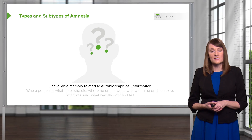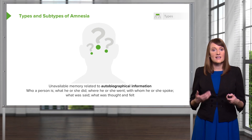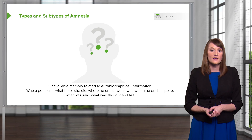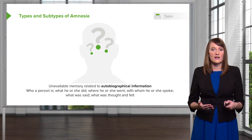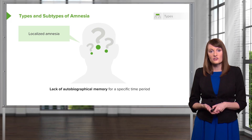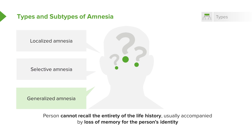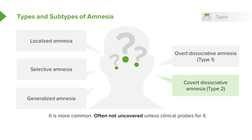When assessing someone, you want to know what memory is available to them. If they aren't recalling autobiographical memory, you want to explore what they can recall — what was happening before an isolated event, how they were thinking, and what they were feeling. You're looking for different subtypes of amnesia: localized amnesia, selective amnesia, generalized amnesia, overt amnesia, and covert amnesia. The definitions of all of these will be important to review.